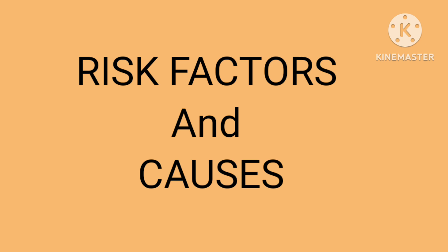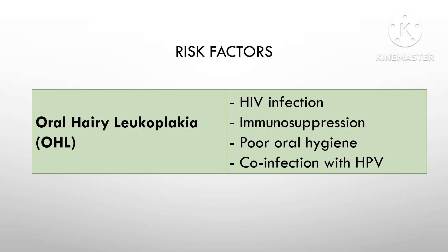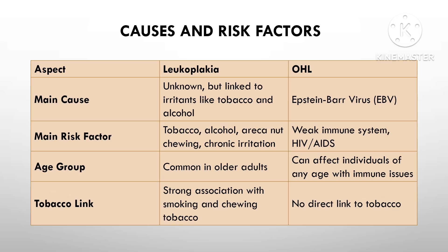The exact cause of leukoplakia is unknown, but it is commonly linked to tobacco use, alcohol use, or chronic irritation. Oral hairy leukoplakia is caused by Epstein-Barr virus and is closely tied to people who have weakened immune systems, especially those with HIV. The biggest risk factors for leukoplakia are tobacco — both smoking and chewing — alcohol, and chronic irritation from rough teeth or dentures. For OHL, the main risk factor is a weakened immune system, most often seen in HIV-positive or AIDS patients.